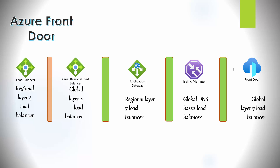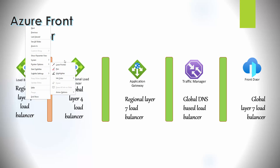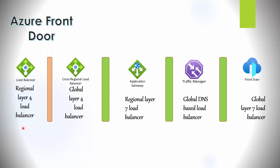Azure Front Door operates at Layer 7 and is also a cloud content delivery network which provides acceleration for static and dynamic content. As a global load balancing service, it provides load balancing globally — meaning it's not tied to any specific region such as UK South, UK West, or anywhere in the US. The Azure Load Balancer and Application Gateway solutions, by contrast, are tied to specific regions.